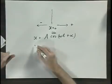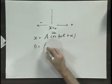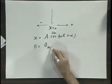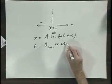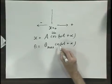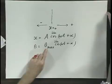Or in case of the pendulum, theta would be theta max times the cosine of omega t plus alpha, or the sine, then we call this a simple harmonic oscillation.